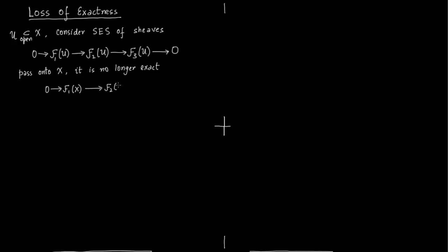So from U as an open set of X, when you pass on to the entire topological space X, this map is no longer surjective — this map might not be an onto map. We can describe this by an example called the exponential sheaf sequence.